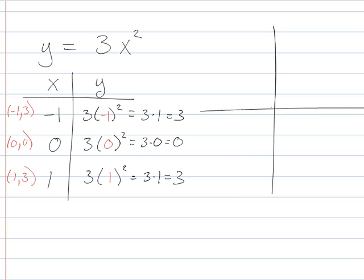So I've got negative 1, 1, 2, 3. Negative 1, 3, 0, 0, 1, 3. Like that. Something like that. Got it?